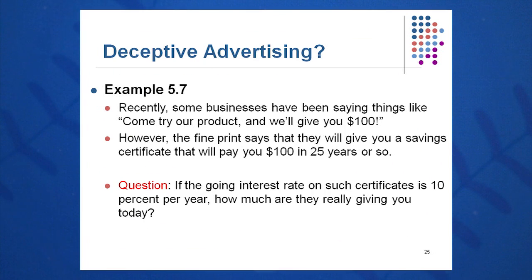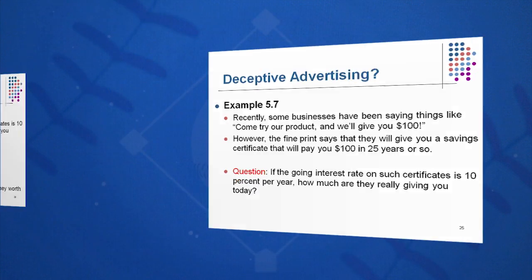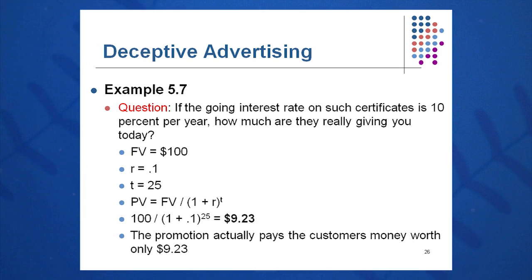You can see some deceptive advertising, and you can use these equations to help you sort through that. Come and try our product — we'll give you $100. Maybe test drive a car and we'll give you $100. But back in the fine print, you see some rules and regulations: you'll get a savings certificate that will pay you $100 in 25 years. You're not getting the $100 today. If the interest rate is 10%, how much are they really going to give you? The present value of this $100 certificate is 100 divided by 1.1 to the 25th, or $9.23. What you're really getting instead of a $100 certificate is $9.23 today.